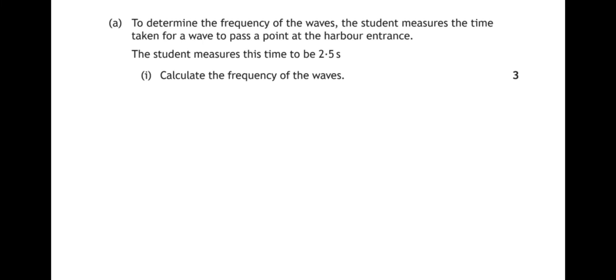Here the student has measured the time it takes for one wave to pass a point. That time is the period of the waves. And we have a formula where period equals 1 divided by frequency. So we can put that number into our formula, rearrange it, and get a value for the frequency to be 0.4 hertz.